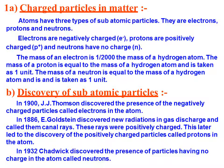Then in 1932, James Chadwick discovered the presence of particles having no charge in the atom, called neutrons. So to summarize: in 1900, J.J. Thomson discovered the electron, which is negatively charged; in 1932, the neutron was discovered by Chadwick; and in 1886, the proton was discovered under the name of canal rays by Goldstein, and later it was more studied and named as protons.